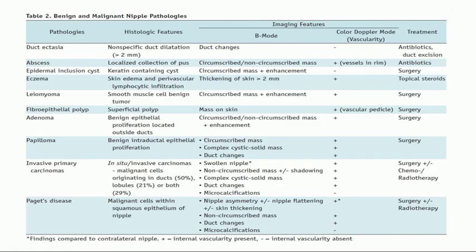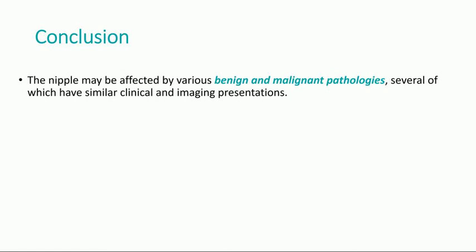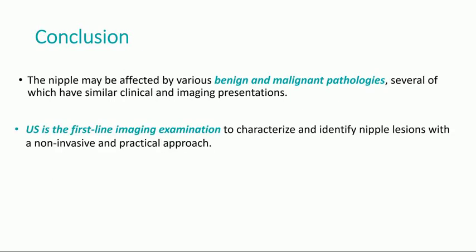In summary, all of the above mentioned pathologies are well summarized in table number 2, where B-mode and color Doppler features may be found together with histologic features and treatment. In conclusion, the nipple may be affected by various benign and malignant pathologies, several of which have similar clinical and imaging presentations. Ultrasound is the first-line imaging examination that helps characterize and identify nipple lesions with a non-invasive and practical approach.